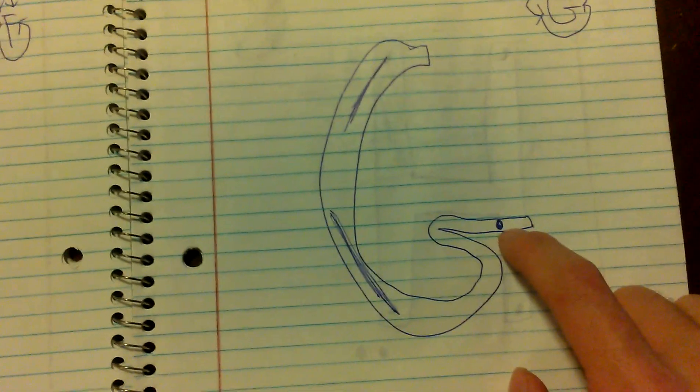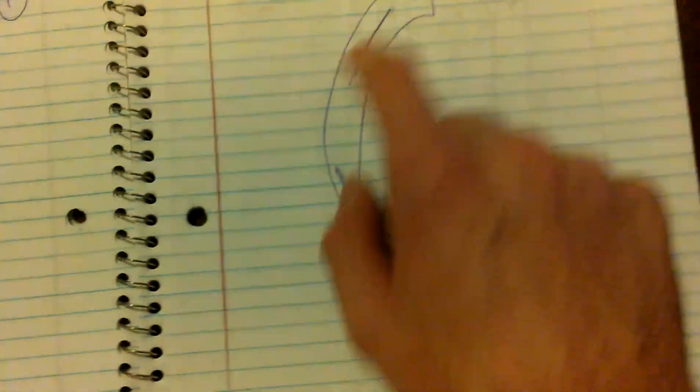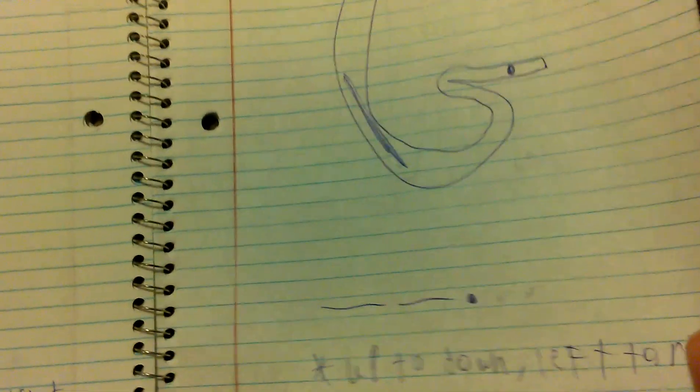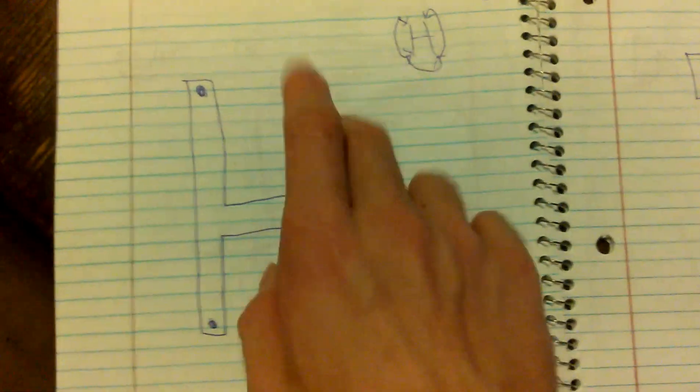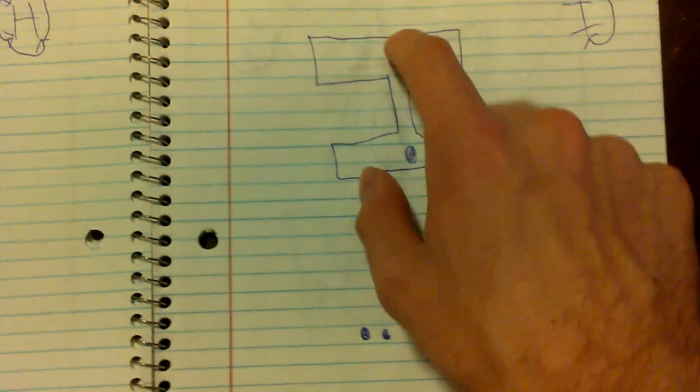And then a G is dash dash dot, that's kind of like the C, it goes up to down. And H is just four dots. And I is just two dots.